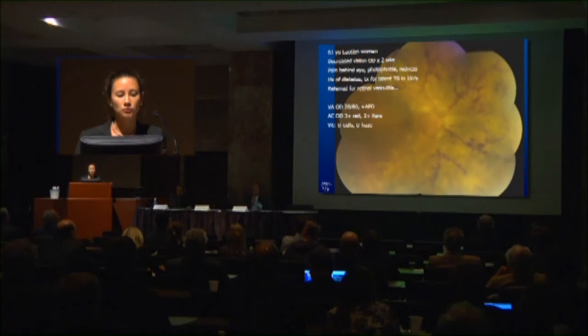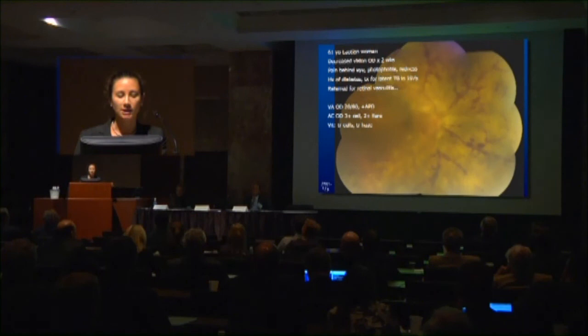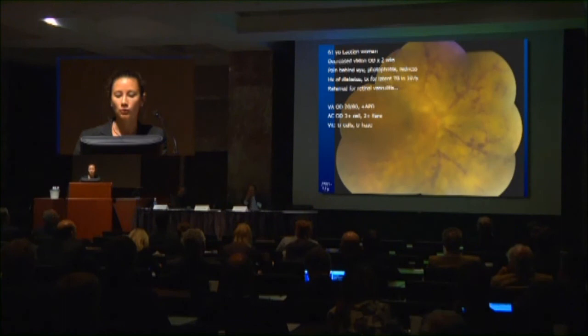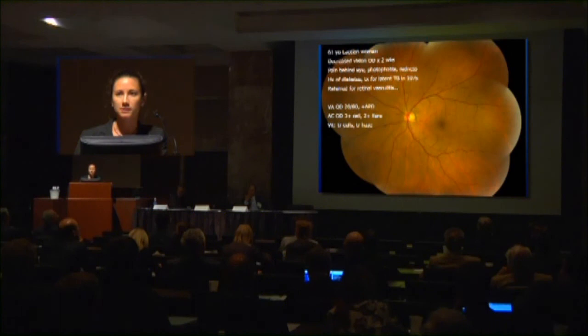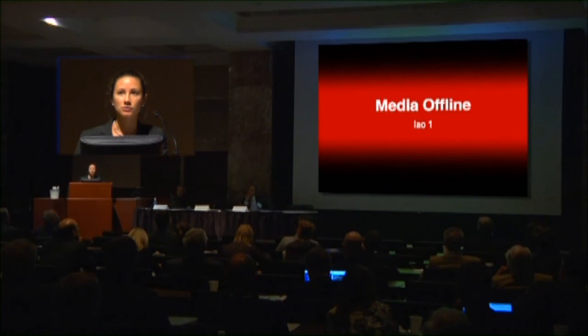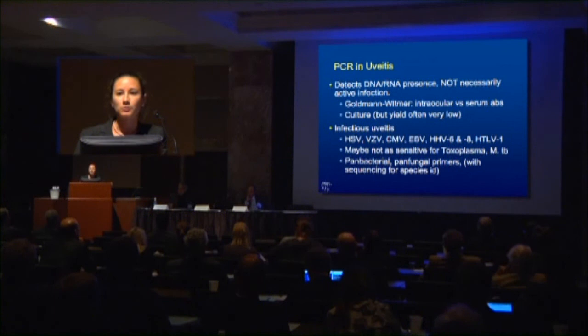Here's another patient — a 61-year-old woman with decreased vision for two weeks, a lot of pain behind the eye, light sensitivity, and redness. She was also diabetic and was referred for retinal vasculitis. Her vision in this eye was 20/80, she had an APD, anterior cell, vitreous cell, and some haze. You can see retinal hemorrhage, vasculitis, and a lot of retinal whitening in the nasal aspect. Her other eye showed some diabetic retinopathy. We did a PCR on her aqueous from an AC tap, which was positive for varicella zoster virus. PCR in uveitis — a lot of people are using it now, which is great — it detects the presence of DNA or RNA, not necessarily active infection.